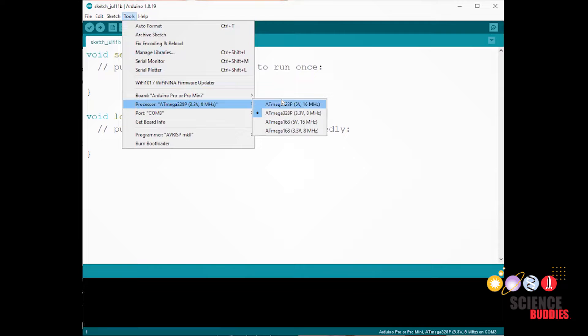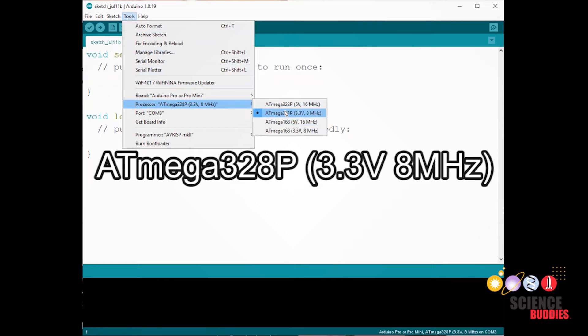Next, go to Tools, then Processor. Select Atmega328p, 3.3V, 8MHz. This option will not appear until you have selected Arduino Pro or Pro Mini for the board.